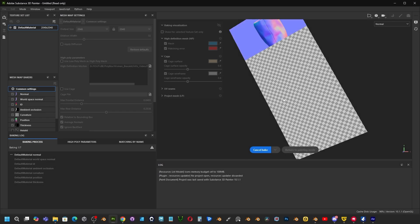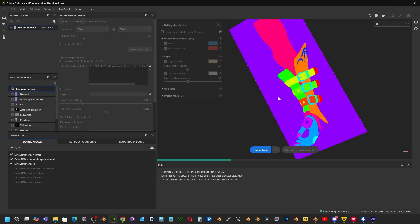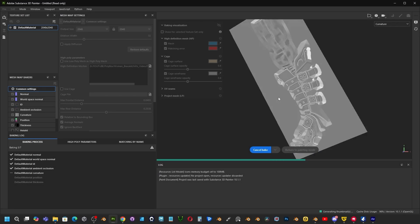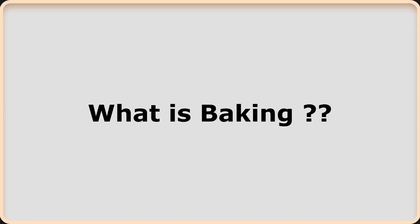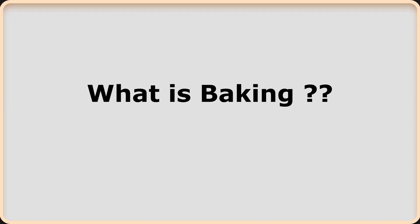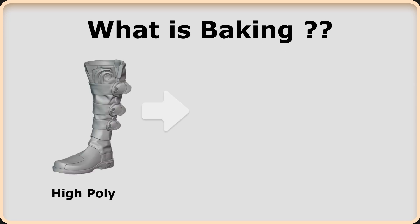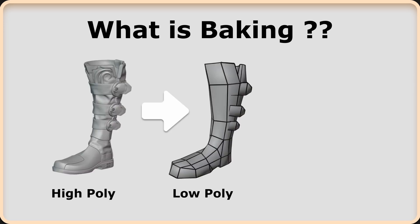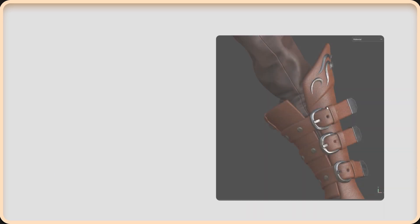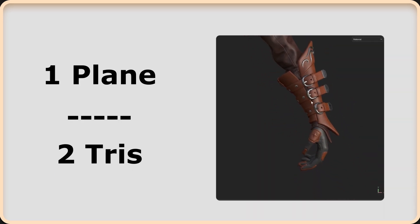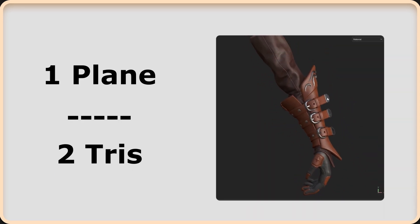In this video, I'll talk about the 3D baking process and the key points to consider when baking game assets. The baking process refers to transferring the details of high polygon 3D models used in the game and film industry to lower polygon models. In short, it is a process that makes polygons that don't actually exist appear as if they do.